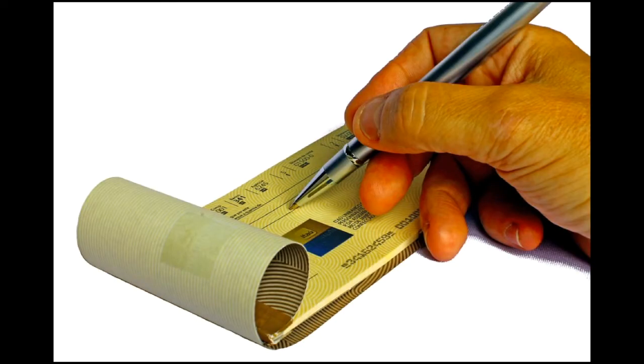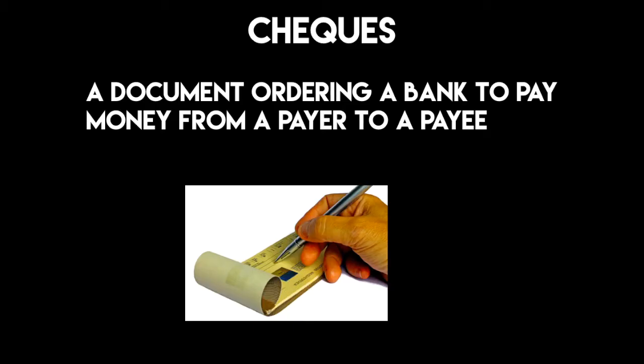Writing a check is essentially telling a bank what to do with your money and where to send it. A check is a document ordering the bank to pay money from your account to a payee — somebody you want to give money to. But again, you might write a check to somebody and there might not be any physical currency that exchanges. You write person X a check, they deposit it at their bank, and the bank has an account for that person. Now your bank is sending money to that bank — it could be all electronic, and most likely it is electronic.